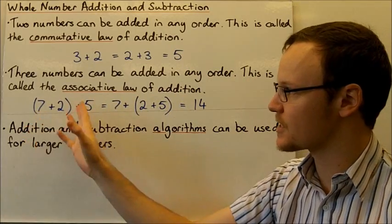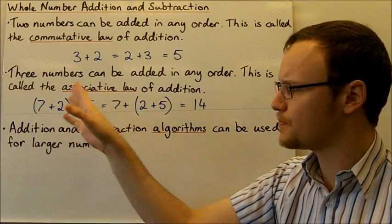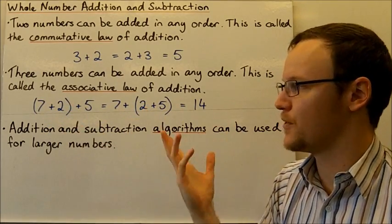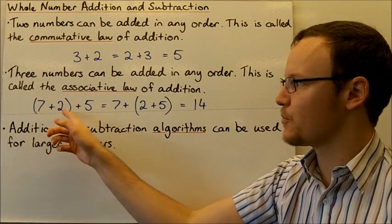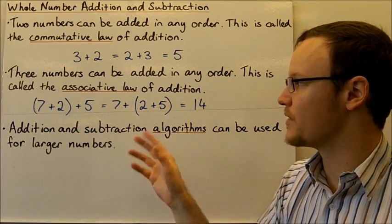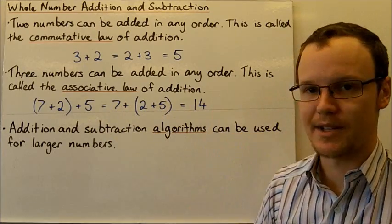So it's like saying if we do 7 plus 2 plus 5, we can add the 7 plus 2 together first, or we can add the 2 plus 5 together first, it doesn't matter. So 7 plus 2 is 9, plus 5 is 14, and 2 plus 5 is 7, plus 7 is 14 as well.